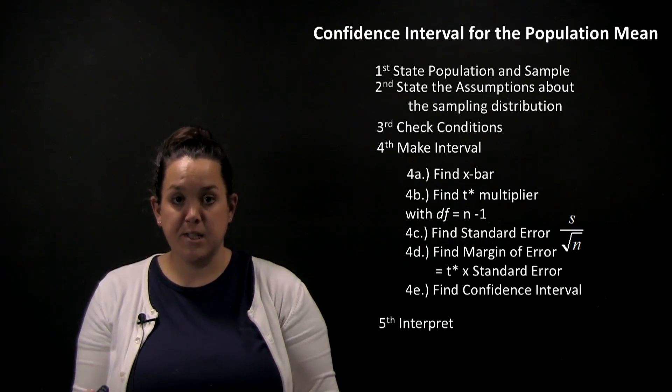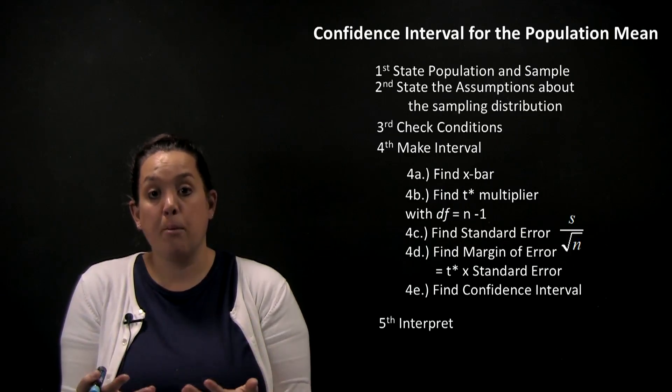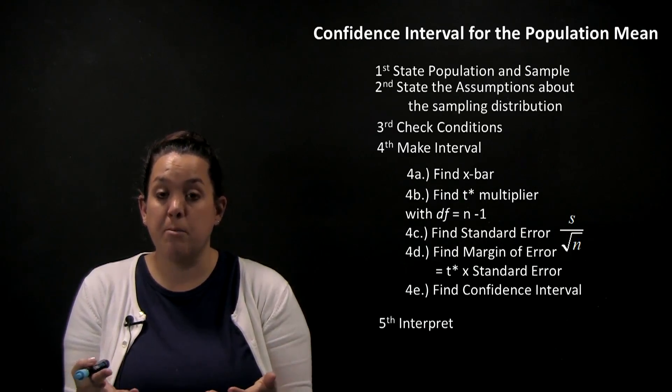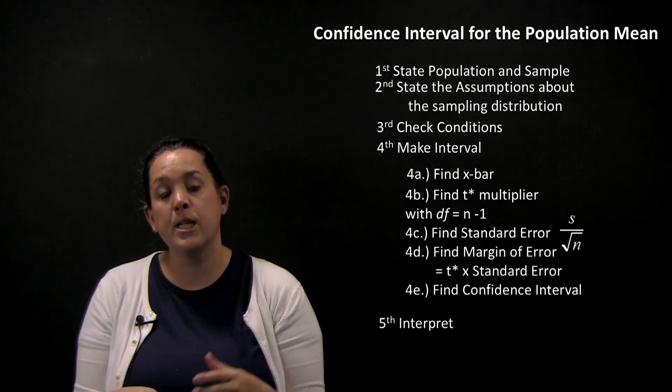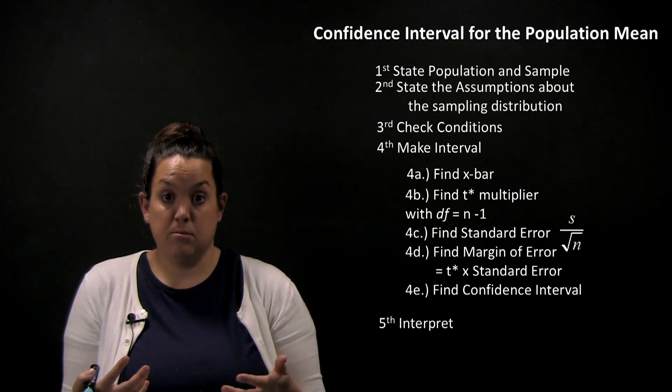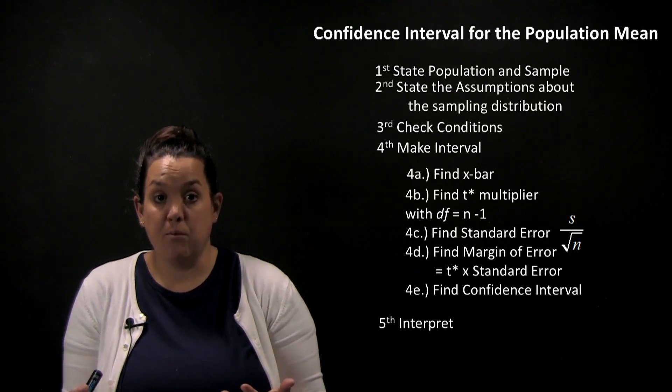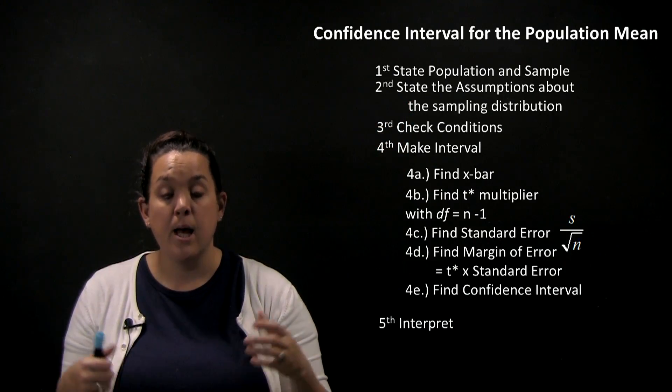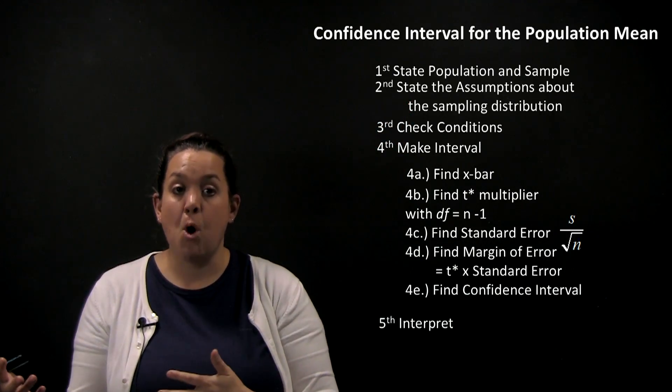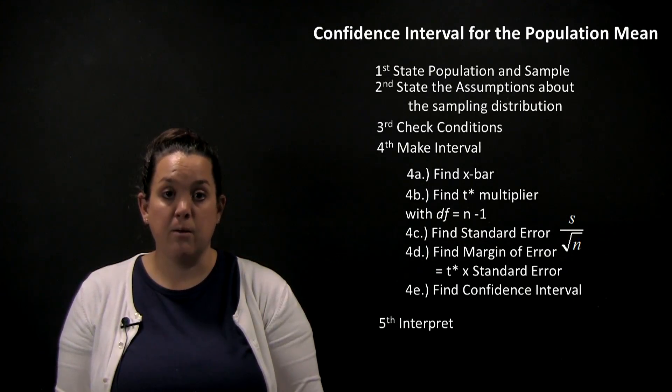The reason that you state the population is because you want to talk about who or what you're going to try to make an inference on—that whole group or large group that you're interested in. And then the sample is the group that's going to help you make that inference. Remember, with statistical inference we have a population we're trying to make an inference on, and then we use a sample or a small group to actually make that inference.